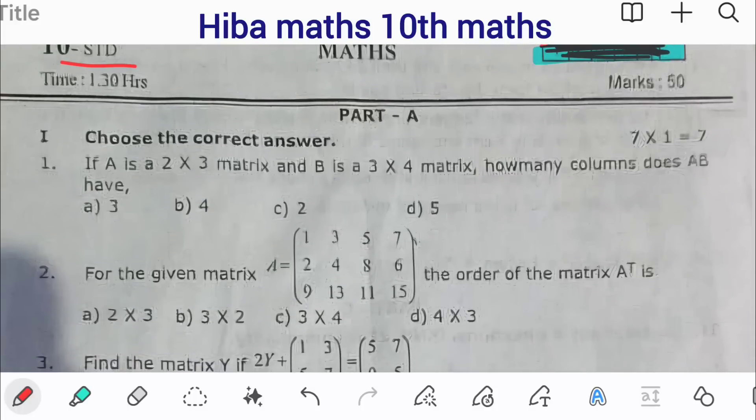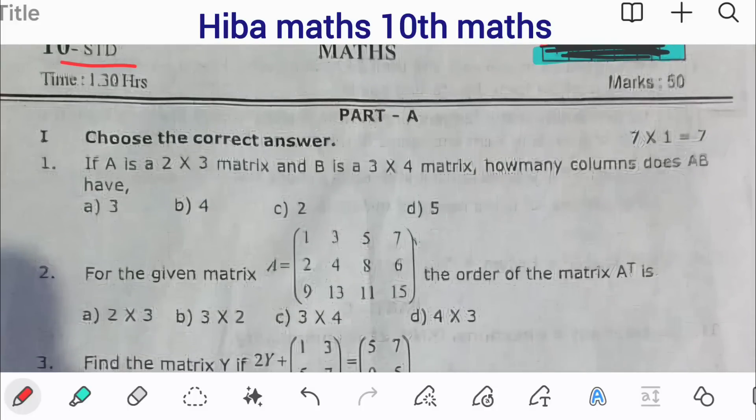Question 1: Choose the correct answer. If A is a 2 by 3 matrix and B is a 3 by 4 matrix, how many columns does AB have? It's very easy. A is 2 into 3, B is 3 into 4. These two are equal, so this row is the column. Then the column is 4.